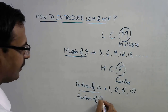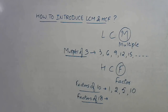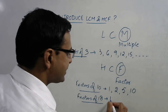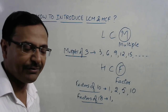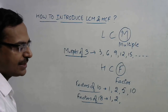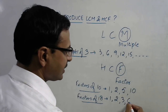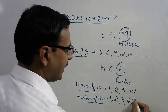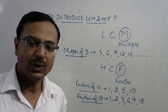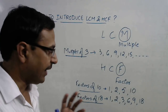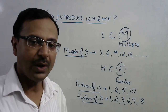Likewise, ask the students for the factors of 18. Once you give the example of 10, do not tell them all the factors of 18 — let them come up with the factors themselves. They will start with 1, then 2 (since 2 nines are 18), then 3 (3 sixes are 18), then it is not divisible by 4 or 5, then 6, then 9, then 18 itself. Let students understand clearly what is meant by factors and multiples.